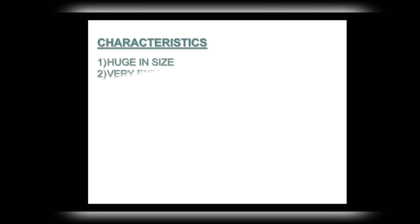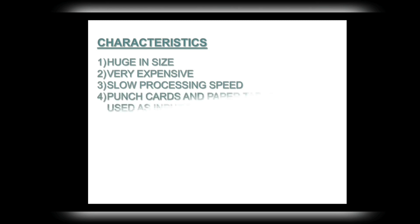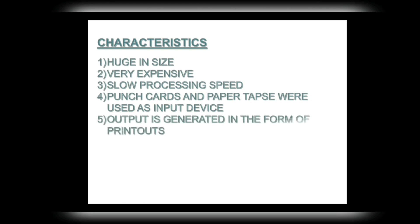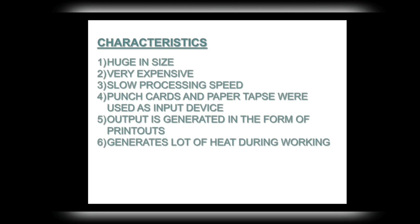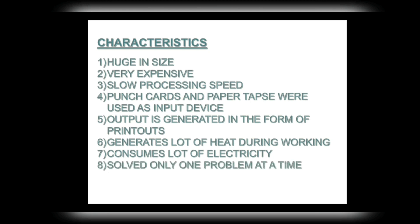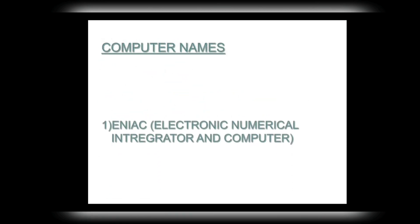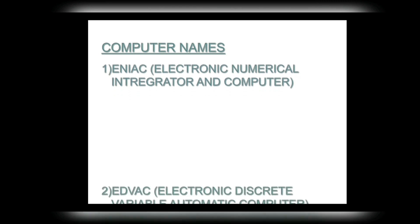Characteristics of first generation computers: number one, huge in size; number two, very expensive; number three, slow processing speed; number four, punch cards and paper tapes were used as input devices; number five, output is generated in the form of printouts; number six, generates a lot of heat during working; number seven, consumes a lot of electricity; number eight, solved only one problem at a time.